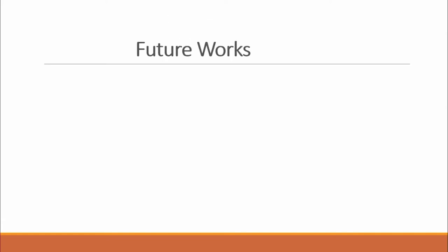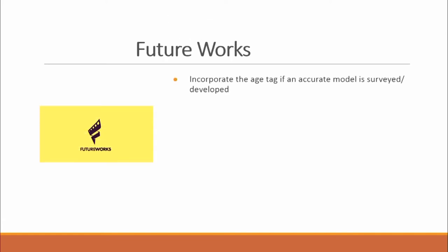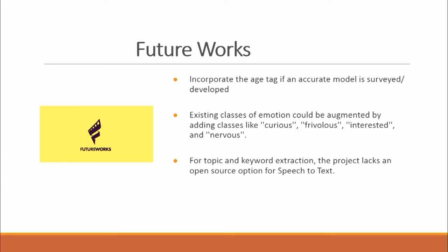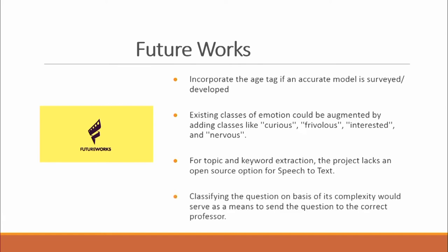For future work: first, it would be interesting to incorporate the age tag if an accurate model is surveyed or developed. Second, to expand the existing emotion classes by adding classes like curious, interested, frivolous, and nervous. Third, since our project lacks an open-source option for speech to text, finding an alternative would be valuable. And lastly, to classify questions on the basis of their complexity — that would serve as a means to send the question to the correct professor.